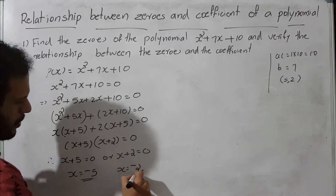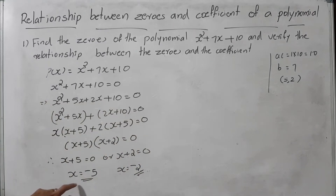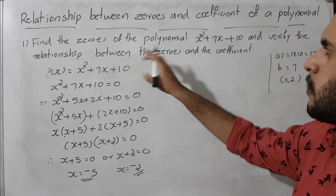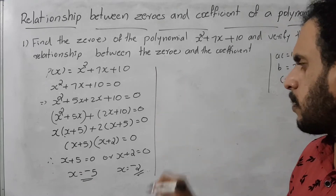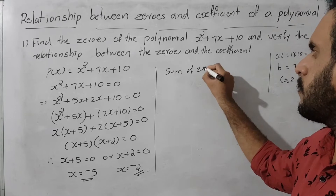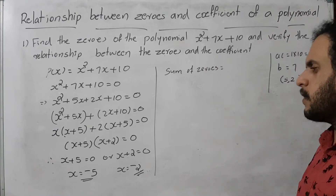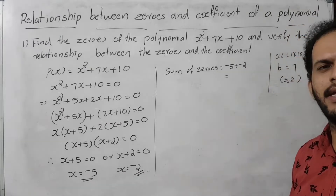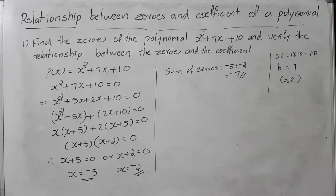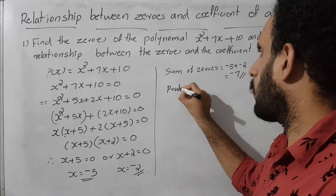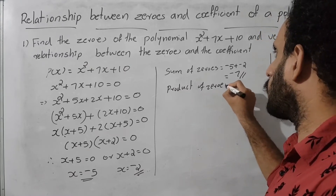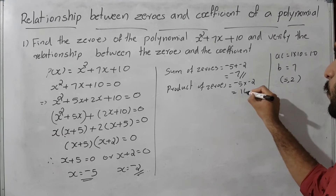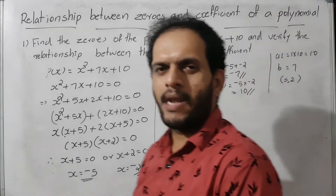The zeros of the polynomial are minus 5 and minus 2. For verification: sum of zeros equals minus 5 plus minus 2 equals minus 7. Product of zeros equals minus 5 into minus 2 equals 10.